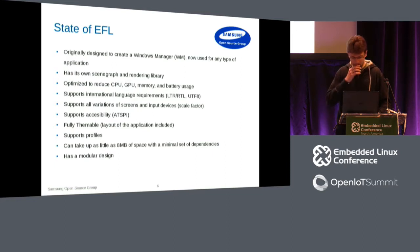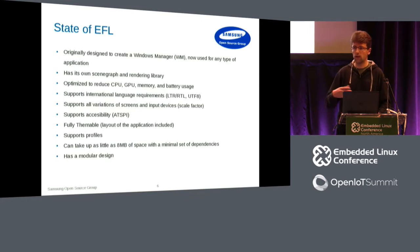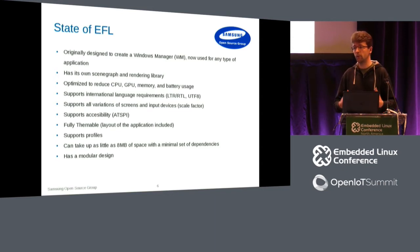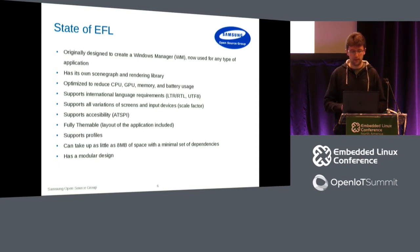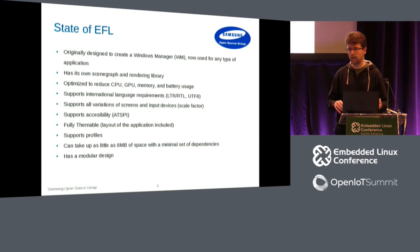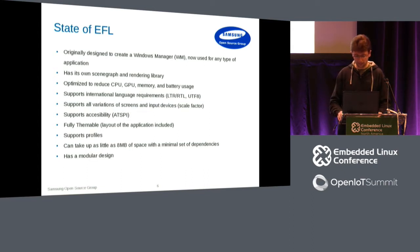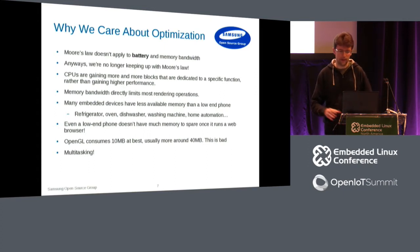We support accessibility. We have a fully themable toolkit, so you don't need to rewrite your own button — you just provide a theme for whatever device you're building, which is what you want for embedded devices. The goal is that if you're running an EFL application, even we who make the toolkit should not be able to tell it's EFL, because you should be able to change everything visual very easily. The minimal set of dependencies for the full toolkit results in eight megabytes of library, including all widgets and even basic video display capability.